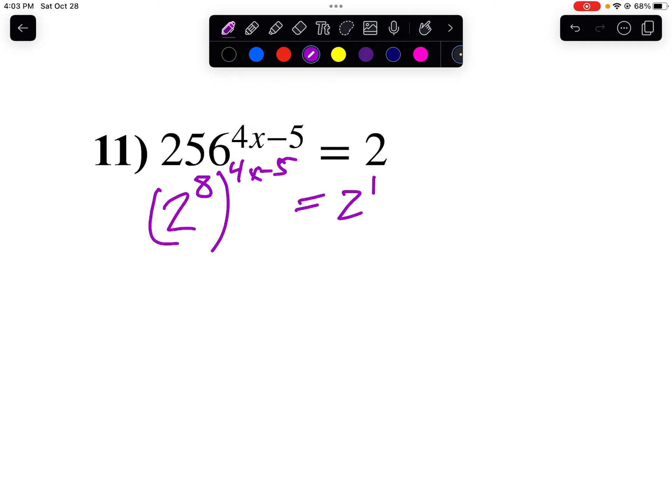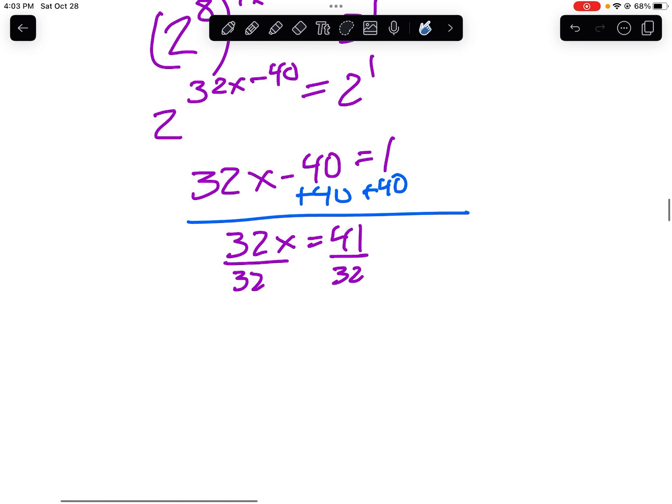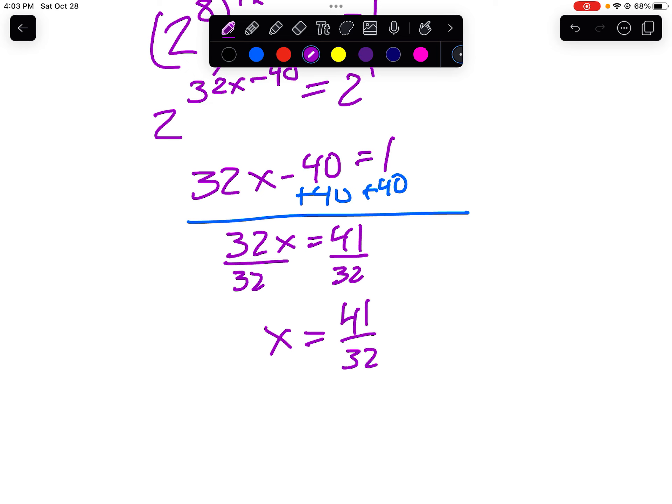Power to a power we multiply. So let's multiply our exponents. So 8 times 4 is 32x. 8 times 5 is 40. Now I'll set it. My bases are the same now. So I'll say 32x minus 40 equals 1. We'll add 40 to both sides. And we'll get 32x equals 41. We'll divide by 32. And x equals 41 over 32. And there's your answer.